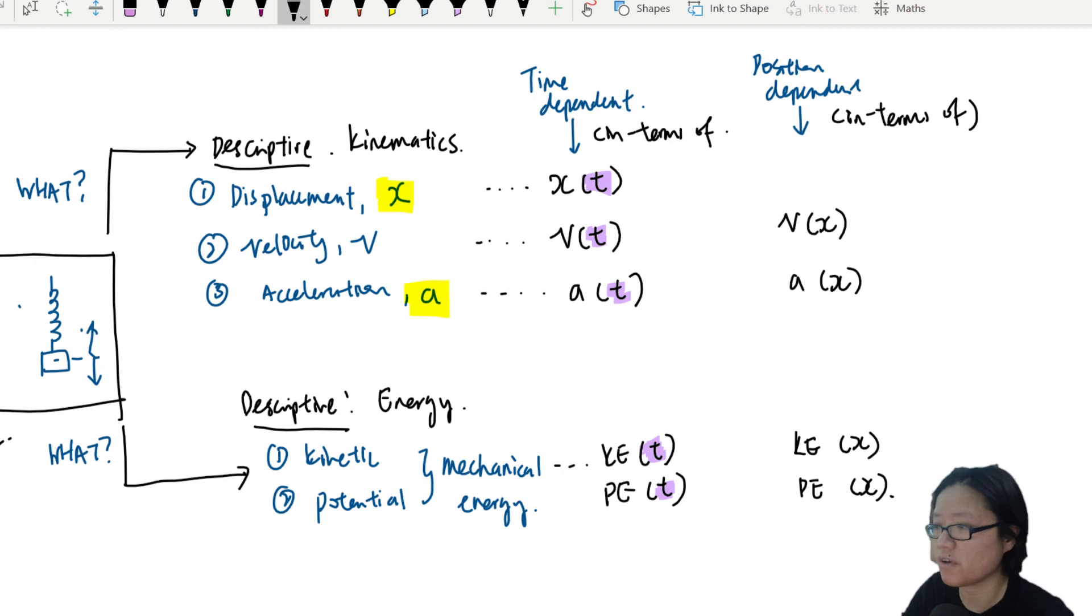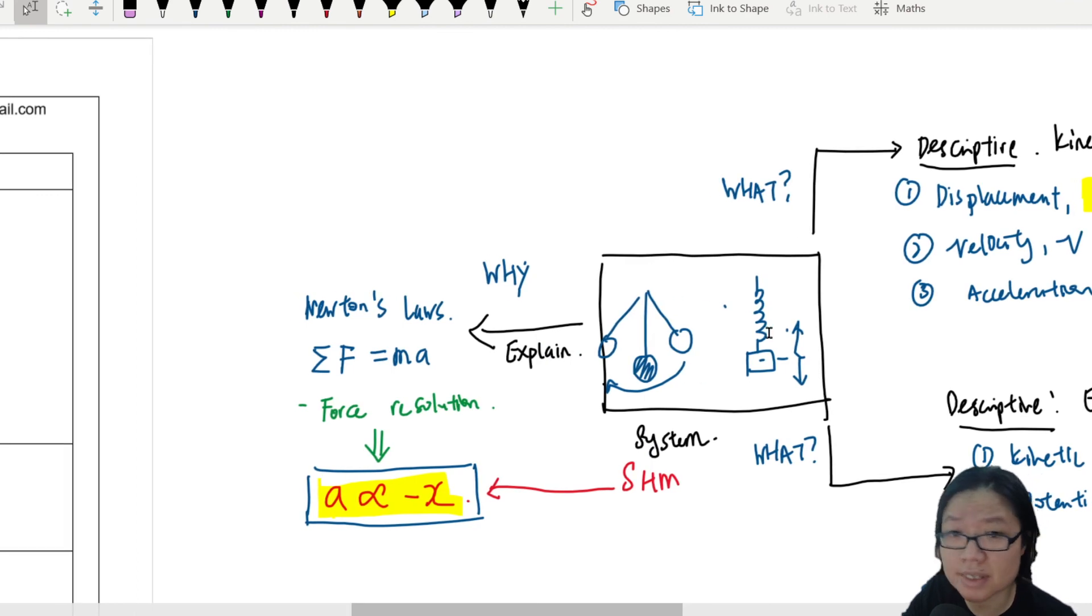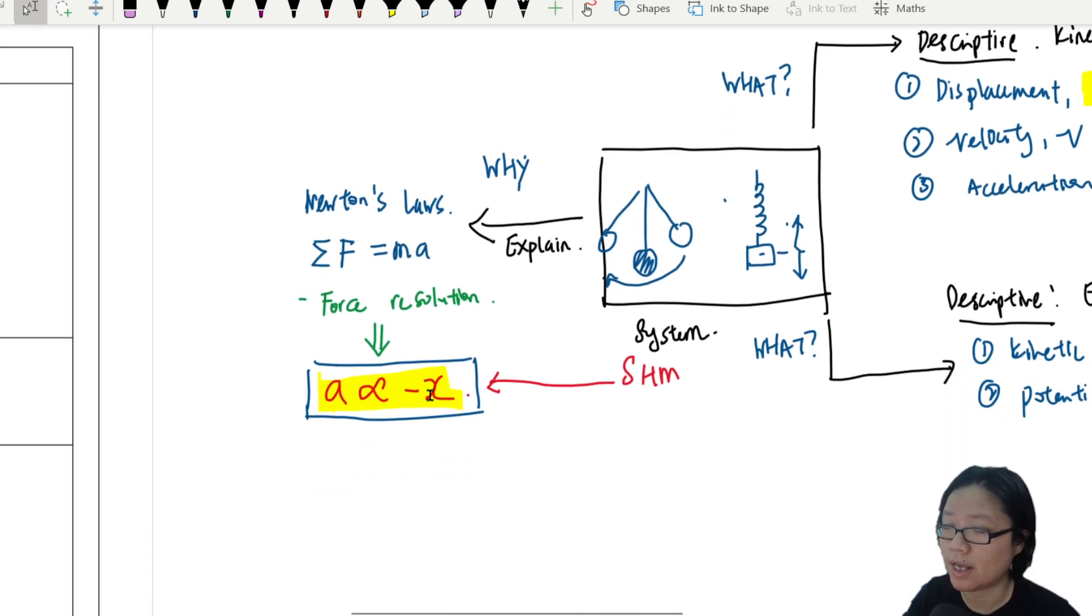So this position-dependent, of course you can't find x in terms of x. So here you will have v in terms of displacement, a in terms of displacement. So basically, what is the speed 2 centimeters away from the equilibrium point? So let's say the center point here is equilibrium. What is the speed 2 cm away from the equilibrium point? What is the acceleration 2 cm away from the equilibrium point? So you will have kinetic energy as a function of x, or basically in terms of x, and potential energy in terms of x.